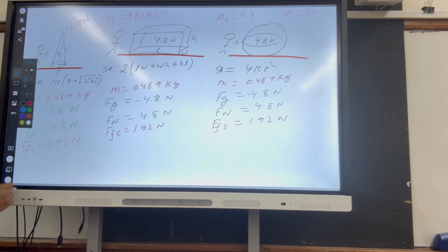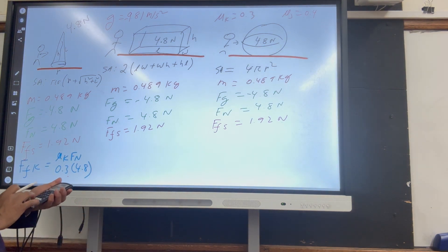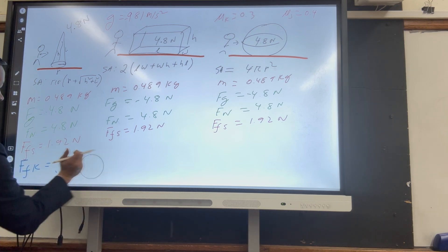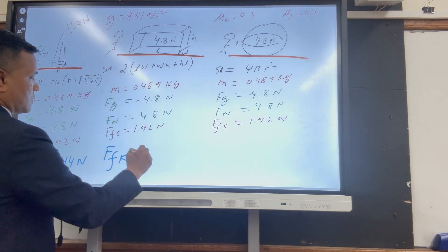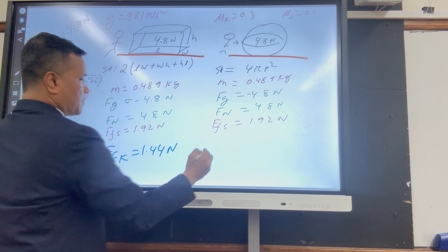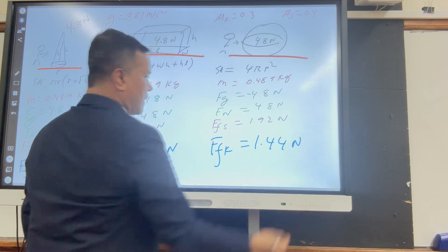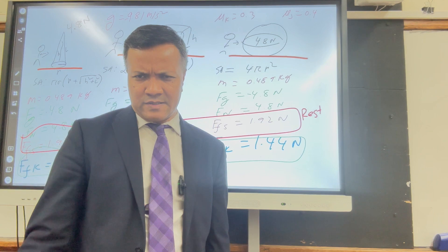Now let's find kinetic friction: F_f_k = μ_k × F_n = 0.3 × 4.8 = 1.44 Newtons. So the kinetic friction force is 1.44 Newtons. The conclusion: whether the object is at rest or in motion, friction does not depend on surface area.